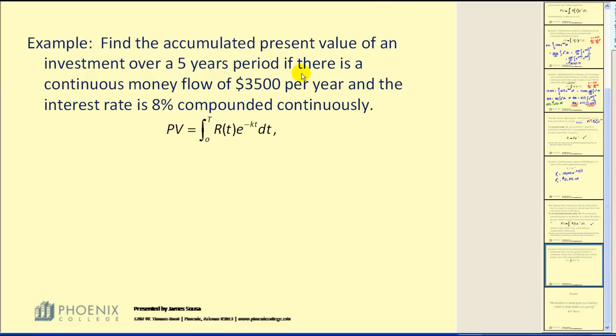Here's an example. Find the accumulated present value of an investment over a five year period if there is a continuous money flow of three thousand five hundred dollars per year and the interest rate is eight percent compounded continuously. The accumulated present value will be equal to the definite integral from zero to five of 3500 times e to the negative 0.08t dt.